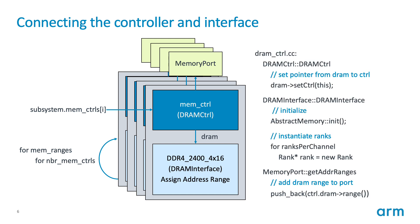When we run the model, the DRAM controller calls a function defined in the DRAM interface that sets up a pointer from the DRAM back to the controller, so that the interface can also understand the controller to which it is attached. Within the DRAM interface we initialize it as an abstract memory, instantiate all the ranks that were defined, and then take the range assigned to the DRAM interface and push it back to the memory port so that the on-chip fabric interface understands the range associated with the connected controller.